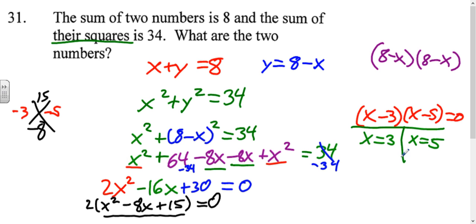So you will also notice that, just like in the last example, our two answers that we got for x are the two answers for our two numbers. It doesn't matter about the x and the y in this case. 3 plus 5 is 8, and then 3 squared would be 9, 5 squared is 25, add those together to get 34. So our two numbers are 3 and 5.